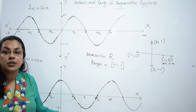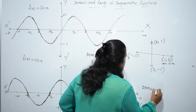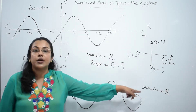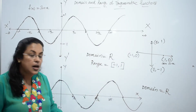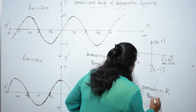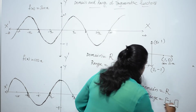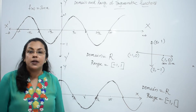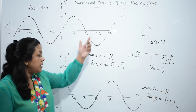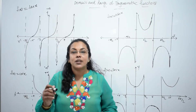Therefore, the domain of the cosine function is the set of real numbers — minus infinity to plus infinity, or we can write it as ℝ. And the range is from minus 1 to plus 1. Hope the idea of domain and range of sine and cosine function is clear to you now.